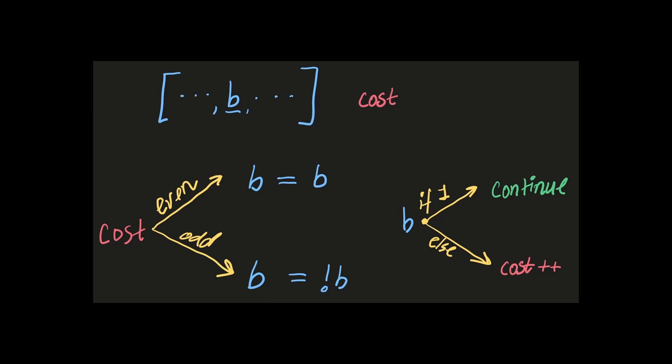Because if we have done even number of flips, the bit remains as is. The bits get reverted back to its original states. So, the b becomes b. It remains as is. However, if the cost is odd, we have to flip the bit.